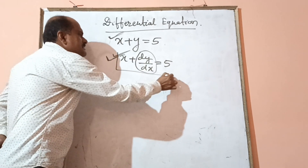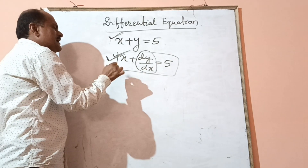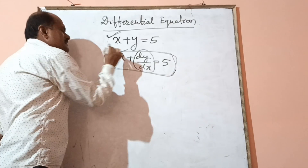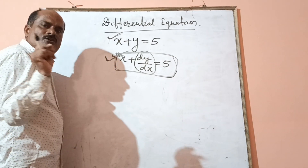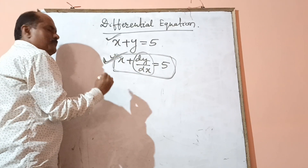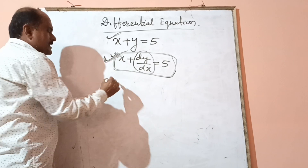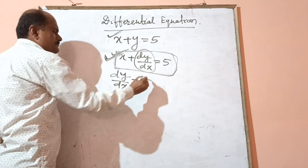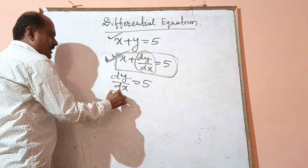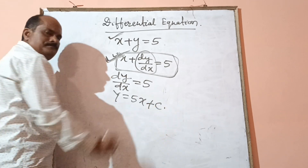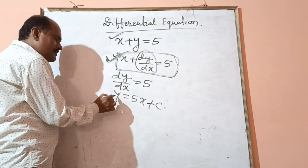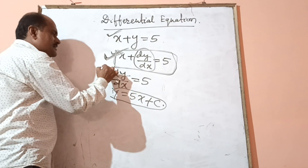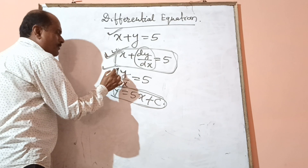What is the solution of a differential equation? The solution means the relation between the variables which does not contain a derivative and satisfies the differential equation. For example, let us consider dy/dx is equal to 5. This is a differential equation. Its solution is y is equal to 5x plus c. This relation between x and y does not contain a derivative but satisfies the equation, so this is the solution.